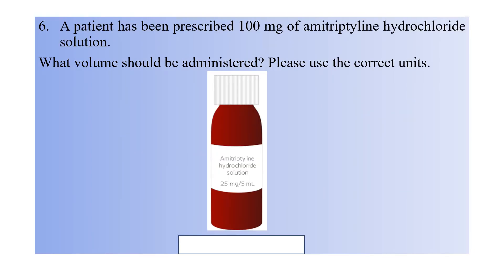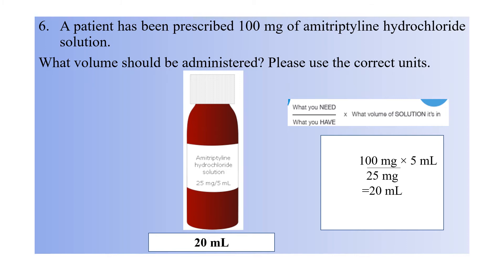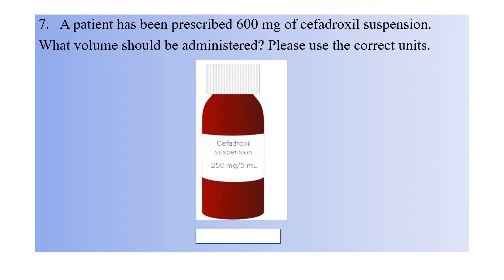Question six: a patient has been prescribed 100 mg of amitriptyline hydrochloride solution. What volume should be administered? Please use the correct unit. The correct answer is 20 mL. Use the formula: what you need divided by what you have, multiplied by the volume of solution. Your need is 100 mg, and you have 25 mg per 5 mL. So 100 divided by 25, multiplied by 5 mL, equals 20 mL.